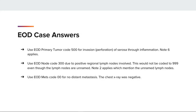EOD case answers: Use EOD primary tumor code 500 for invasion/perforation of serosa through inflammation — Note 6 applies. Use EOD node code 300 due to positive regional lymph nodes involved; this would not be coded to 999 even though the lymph nodes are unnamed — Note 2 applies, which addresses unnamed lymph nodes. Use EOD mets code 00 for no distant mets, as the chest x-ray was negative.